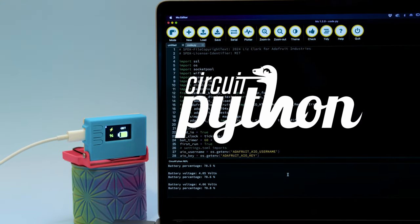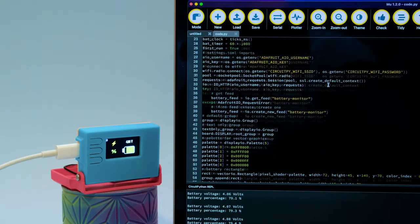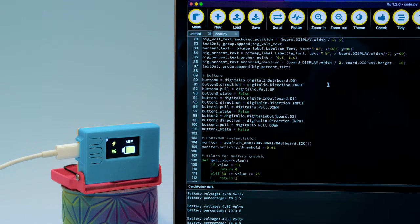The CircuitPython code checks the battery every minute and the graphics are updated with the voltage and charging percentage data on the TFT. The data can also be logged to an Adafruit.io feed for later analysis.